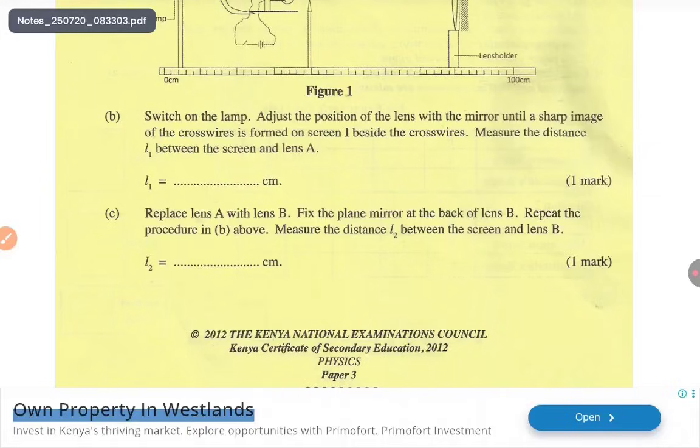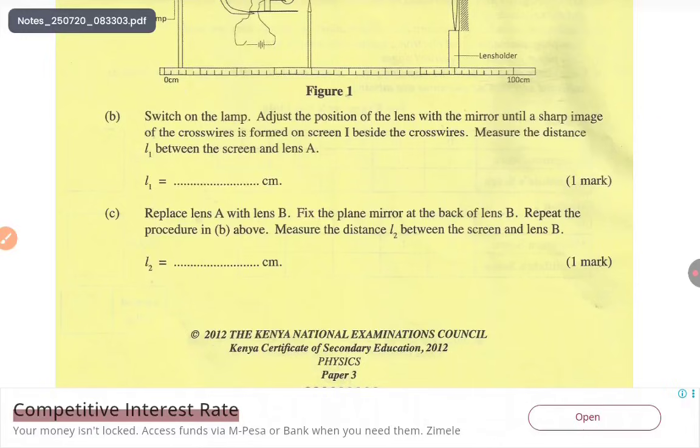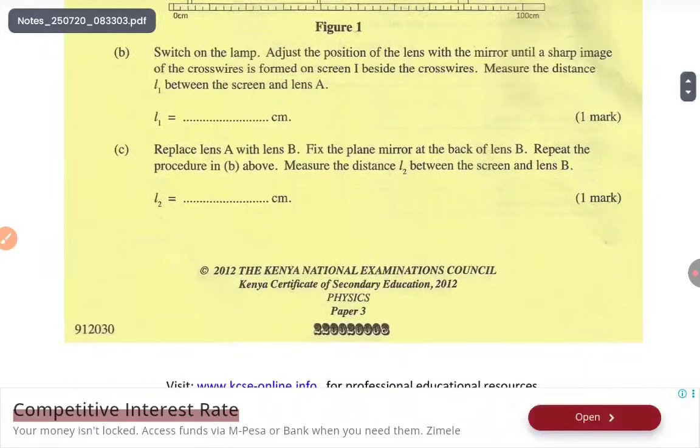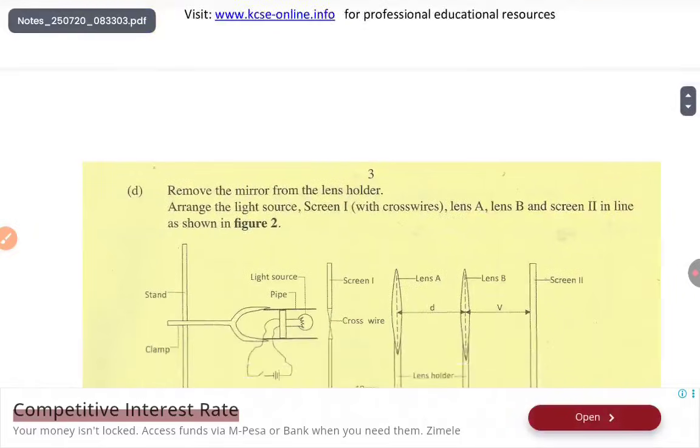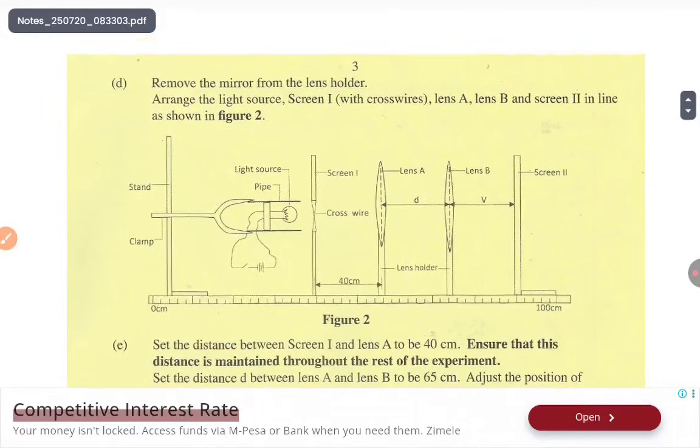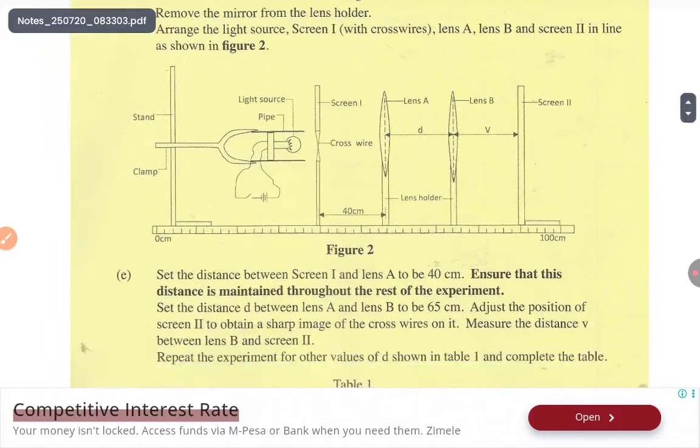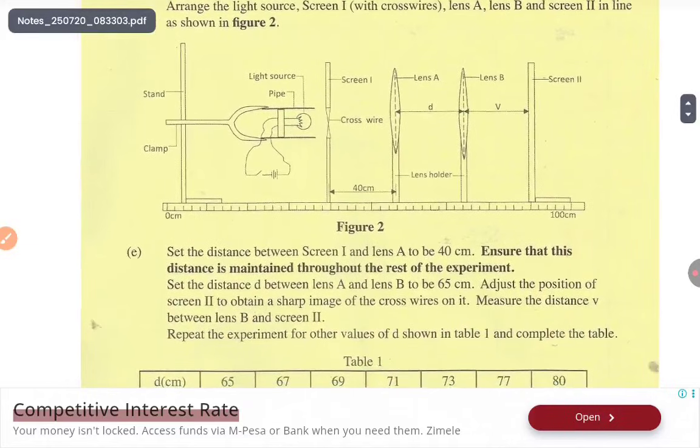Replace lens A with lens B. Fix the plane mirror at the back of the lens, just follow instructions and label L2. Now remove the mirror from the lens holder. Arrange the light source, screen one with cross wire, lens A, lens B, and screen two in line as you can see there. In physics, you just need to follow instructions and everything will go very well.